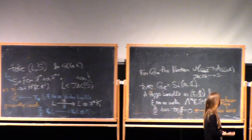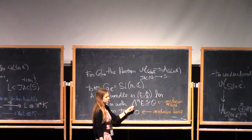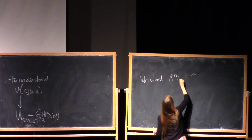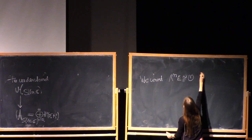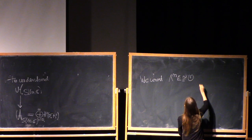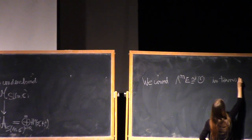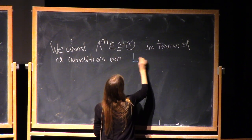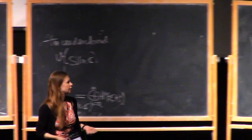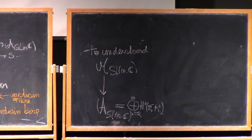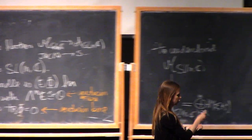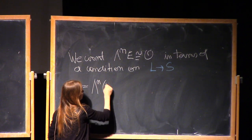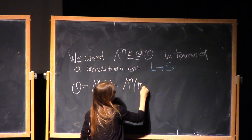Now, what do we do about the fiber? The fiber is a condition that we want to get from the top exterior power. We want to understand the condition: the top exterior power of E isomorphic to the trivial line bundle, in terms of a condition on the spectral cover line bundles. We want this in terms of a condition on the line bundle L over the spectral cover. Because we want trivial determinants, we want O to equal the top exterior power of E, but this is also the top exterior power of the direct image of L.